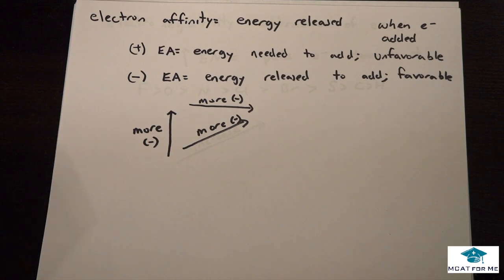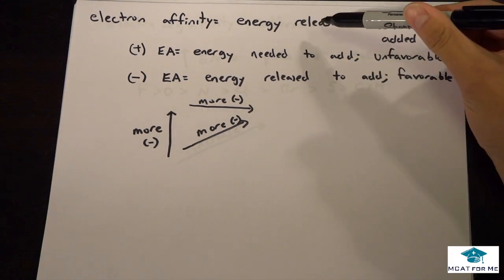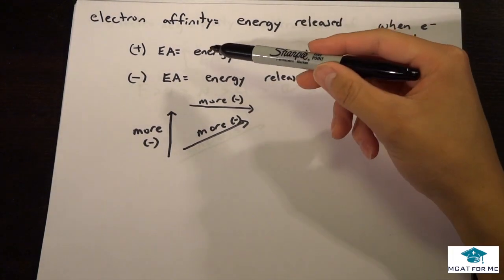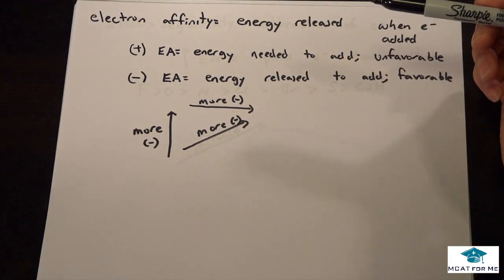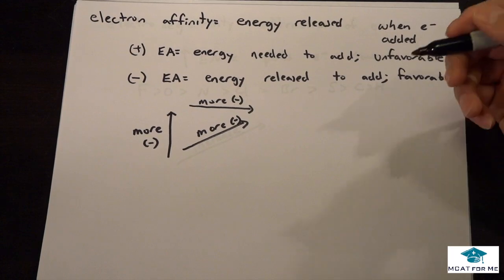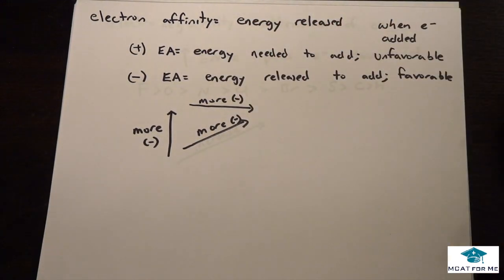So the next one we're going to talk about is electron affinity. And so what exactly is electron affinity? So electron affinity is either positive or negative. And it's the energy released when an electron is added. And so a positive electron affinity means that you need energy in order to add it. So something that doesn't want an electron will require more energy. Something that's negative releases the energy and it's favorable.